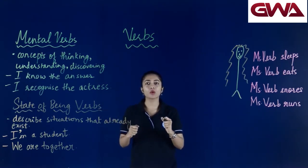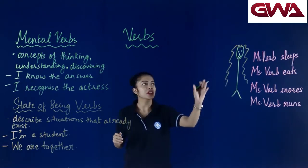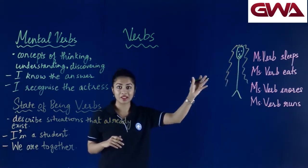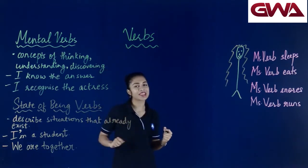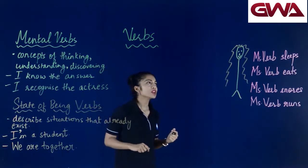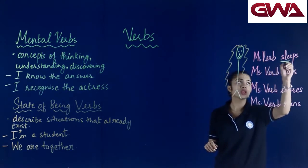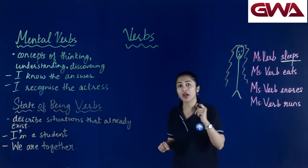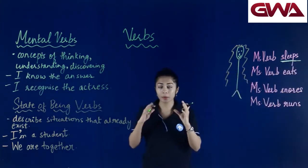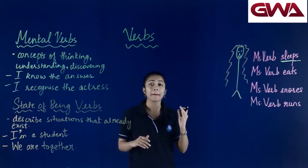Today I am going to learn about verbs with the help of Miss Verb, who is our friend. So Miss Verb sleeps — she is sleeping. This word, sleep, is our verb, because this word is about sleeping and action.